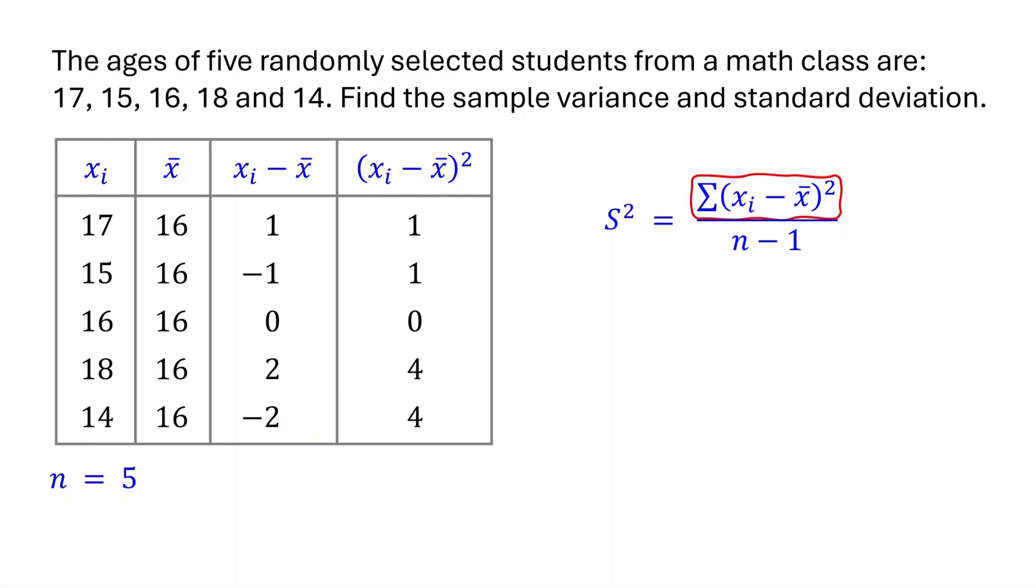Now, to get this sum in the numerator, you just need to add up all the squared differences. Adding these squared differences, we get 10. Since the sample size is 5, we divide by 5 minus 1, which is 4. 10 divided by 4 is 2.5. Therefore, the sample variance is 2.5.